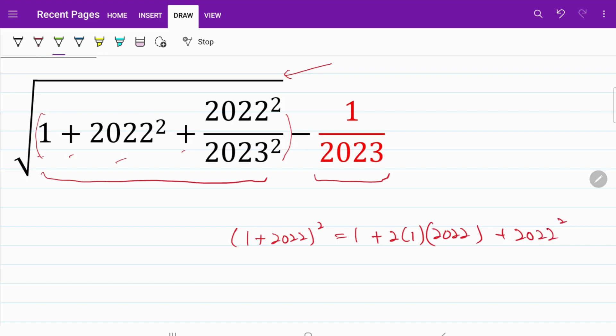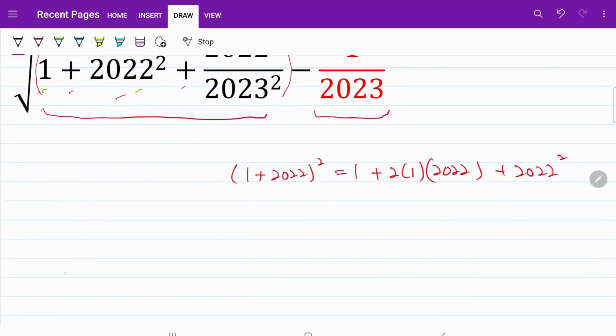From here, I notice that 1 and 2022 squared is already contained within the expression. So what I'm going to do is write this into the square root. And to keep things in perspective, let me use the red color.